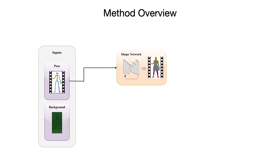In the first step, we apply a shape estimator that estimates the target actor's 2D shape in the form of dense body part segmentation from the provided pose. This representation provides direct information on the position of different body parts and can model the deformations of loosely swinging garment independently of the final appearance.